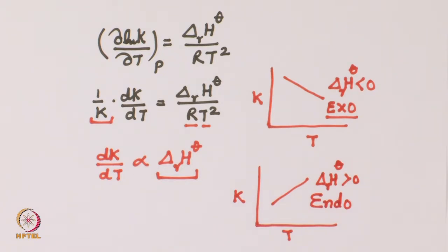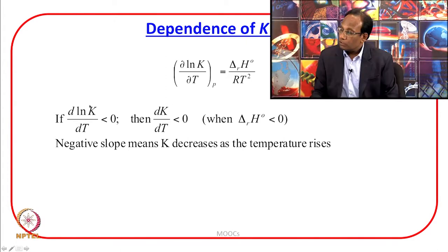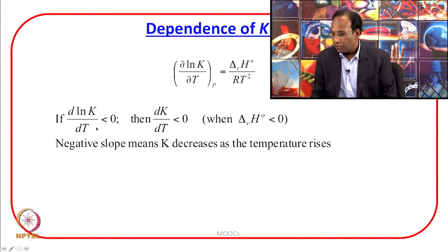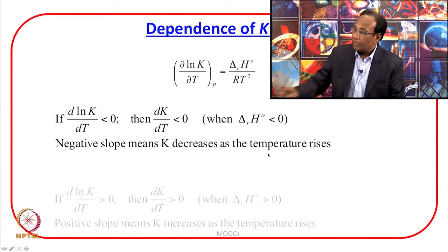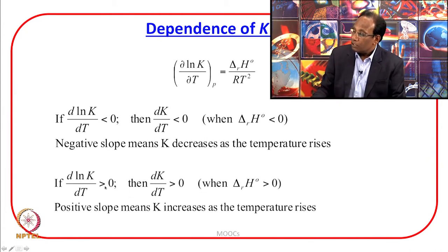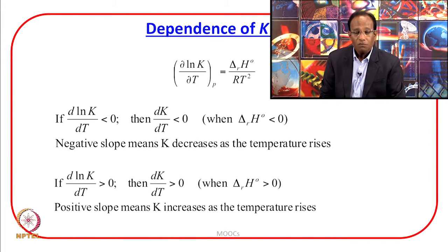Looking at the slide: if dK/dT or d(ln K)/dT is less than zero, this is true for an exothermic reaction — K decreases as temperature rises. On the other hand, if dK/dT gives a positive slope, the reaction is endothermic and K increases as temperature rises. These observations are in accordance with Le Chatelier's principle.